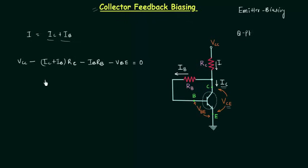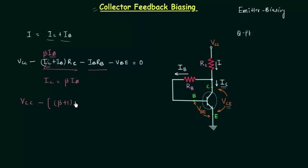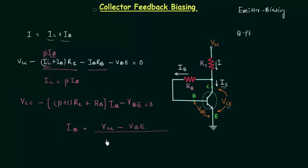We already know the collector current IC is equal to beta times IB. So we can write IC equal to beta times IB. Taking IB common, we get: VCC minus [(beta + 1) times RC plus RB] times IB minus VBE equals zero. Therefore, IB equals (VCC minus VBE) divided by [(beta + 1) times RC plus RB].